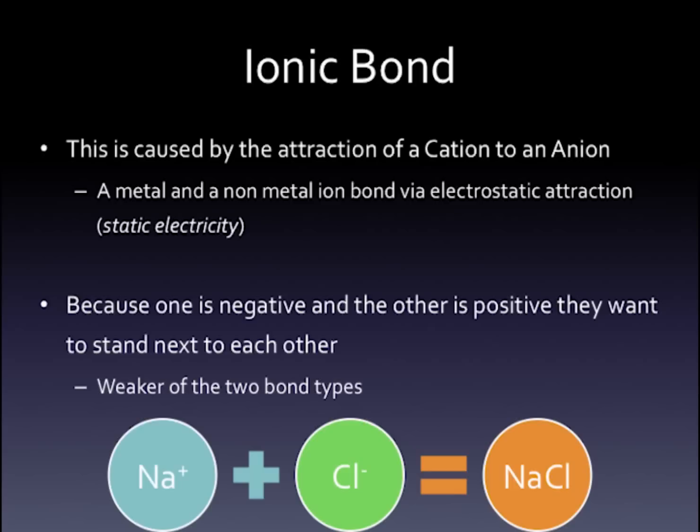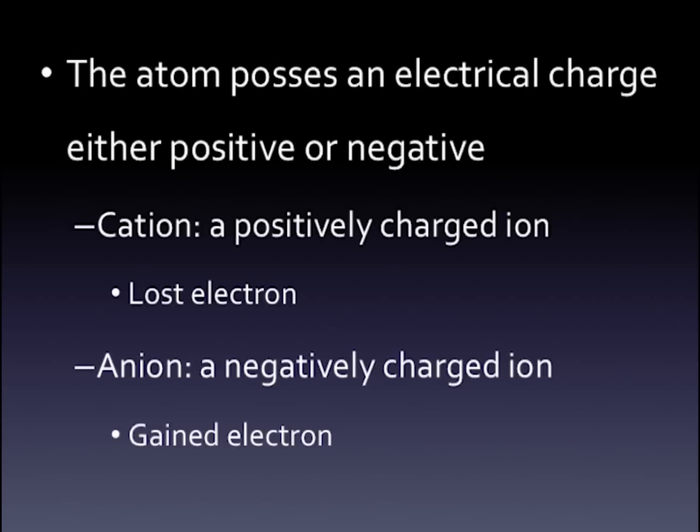It's a very weak kind of bonding. This is caused by the arrangement of a cation and an anion — a metal and a non-metal ion — bonding via electrostatic attraction, which is essentially static electricity. If you want an example of static electricity, throw some clothes in a dryer without a dryer sheet, pull them out, and they stick to you. Static electricity, as you might be aware, is not a very strong force, so this type of bonding is not a very strong bond. A classic example of ionic bonding is sodium chloride, or table salt.